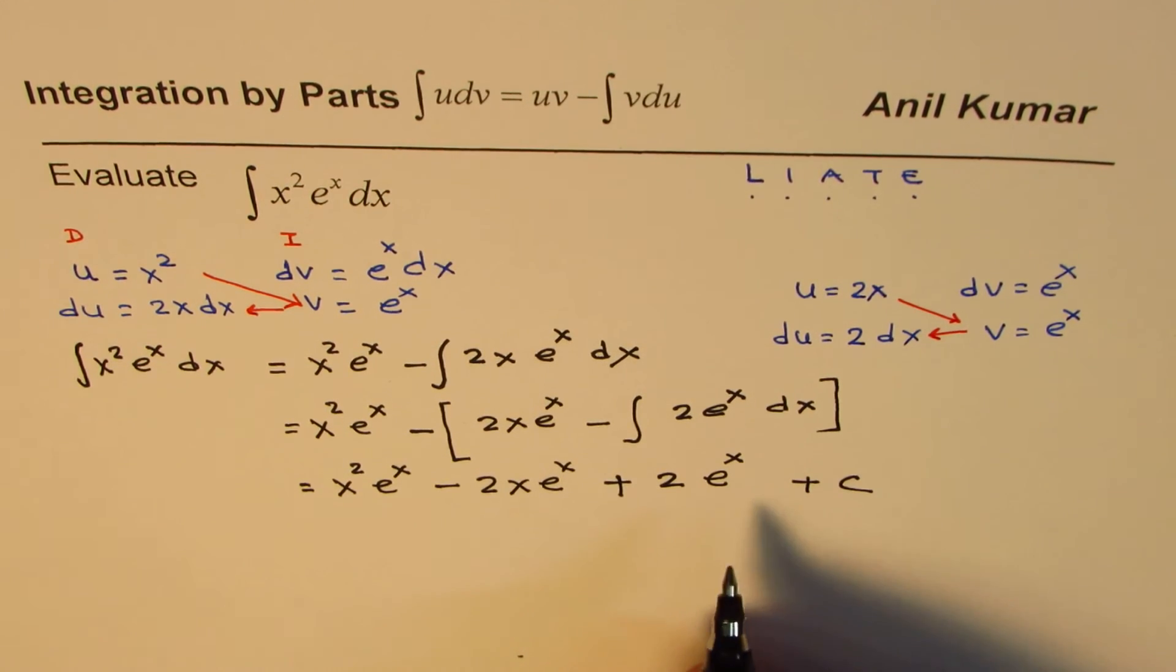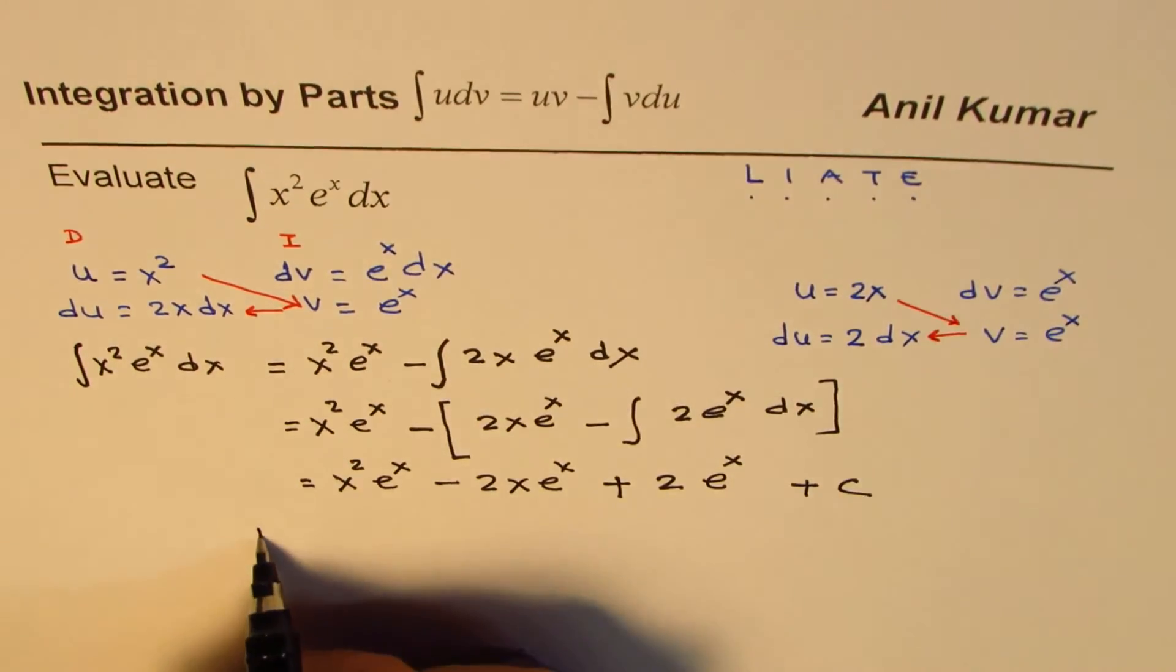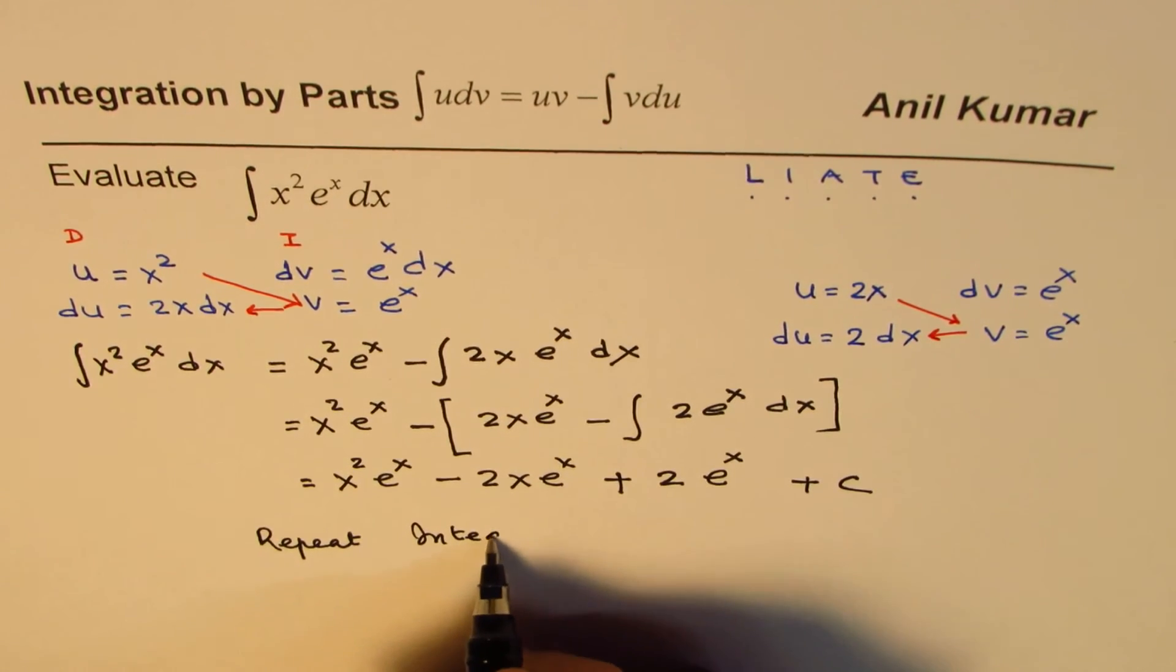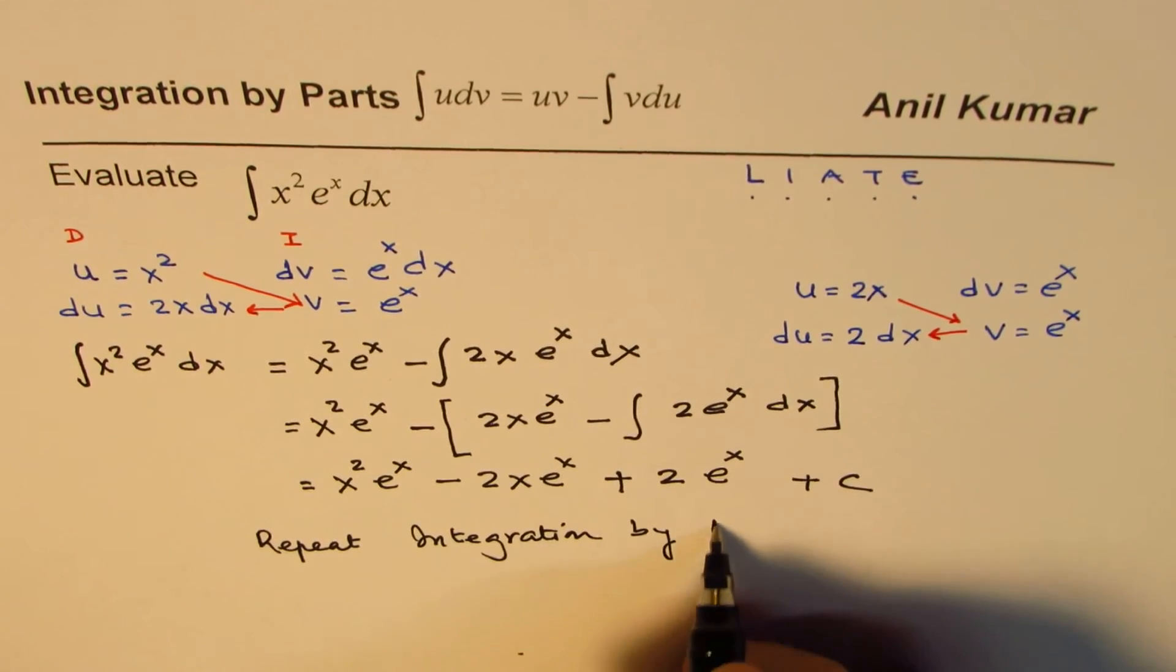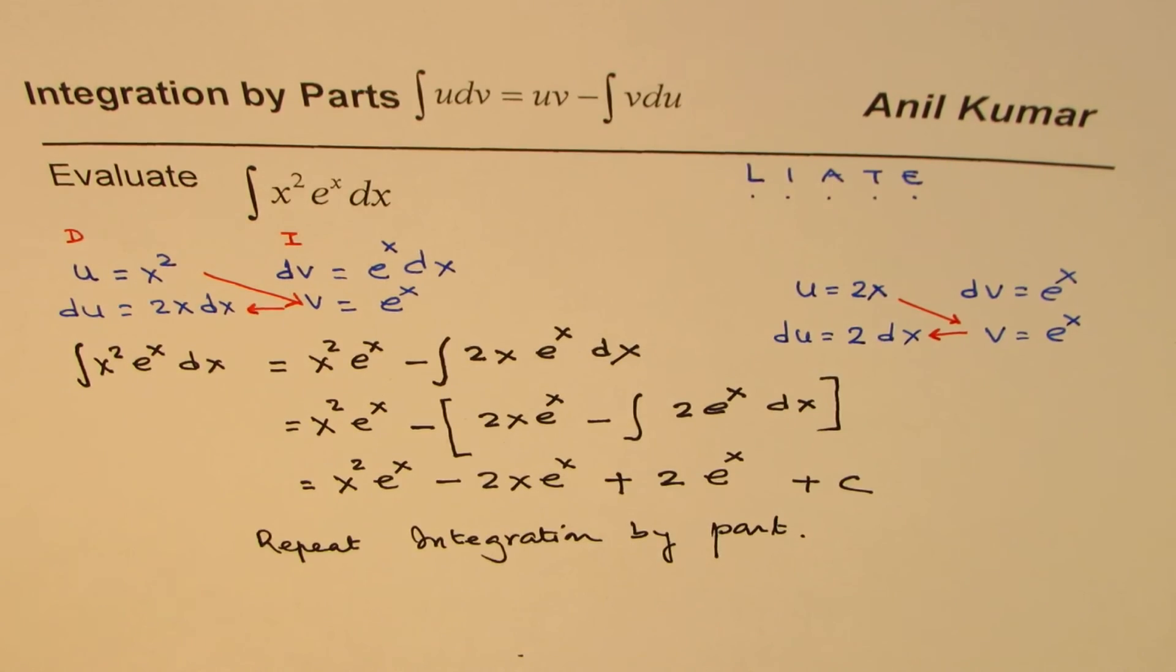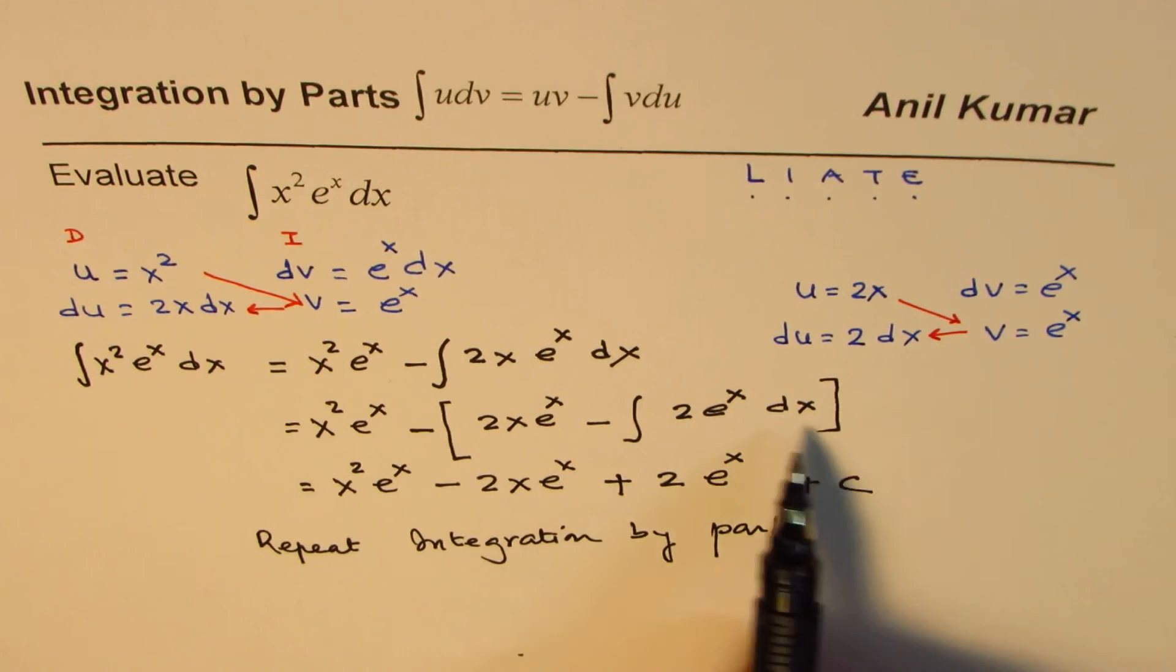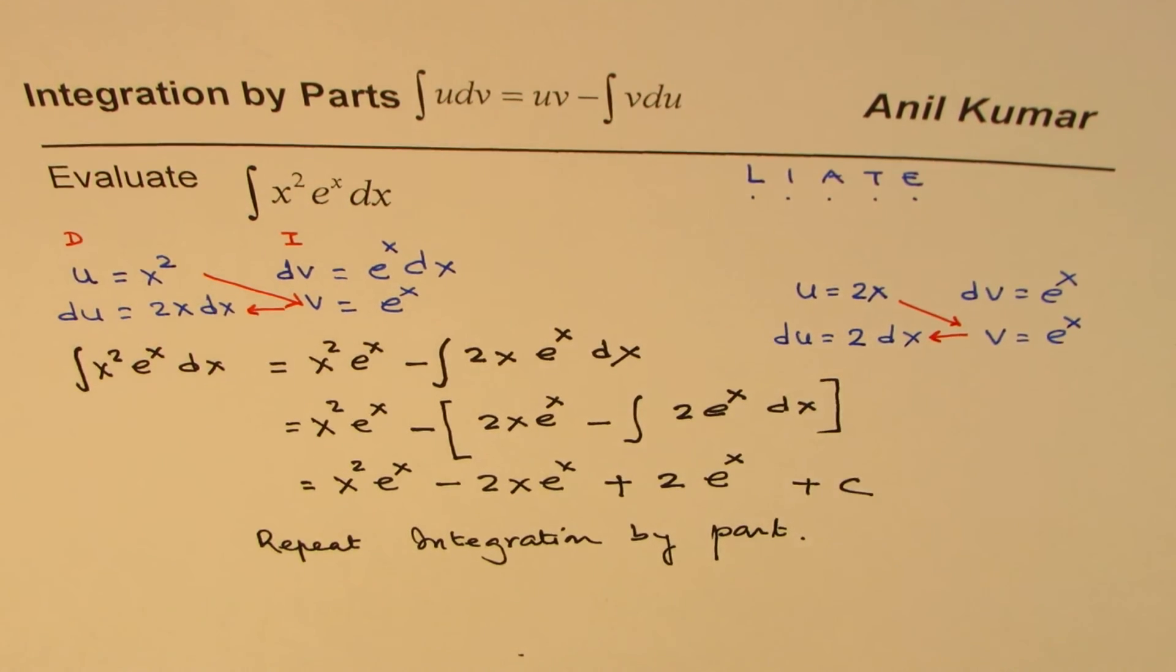What you saw in this example is that you may have to do this a couple of times. You may have to repeat integration by parts at times, but the idea is any number of times you repeat it becomes simpler and simpler to find the value. So eventually you get your answer. I'm Anil Kumar and I hope that helps. Thank you and all the best.